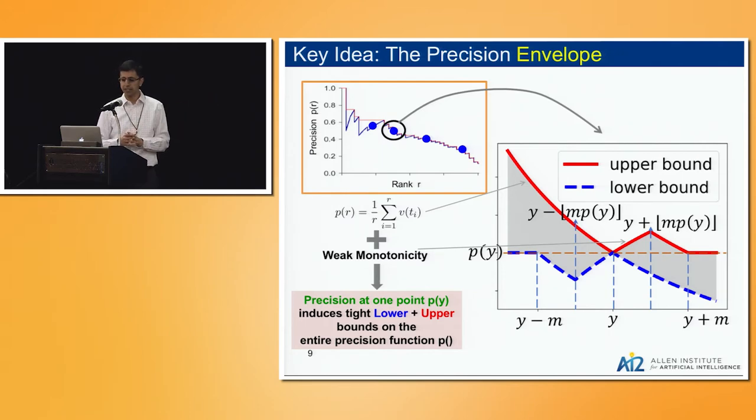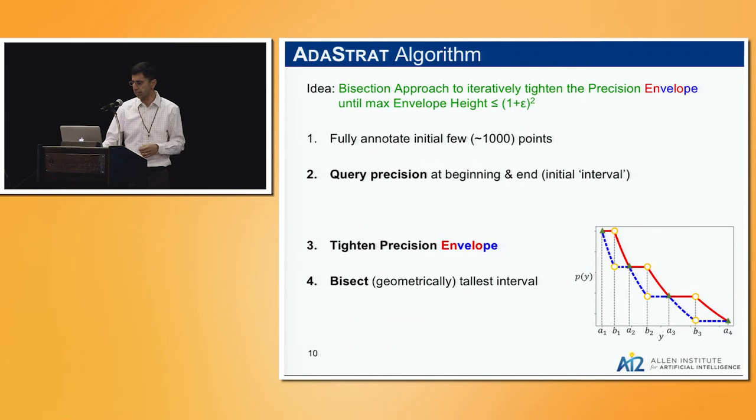One other thing I would note is that this envelope is tight in the sense that both the red and the blue things are plausible valid precision functions given some data. Any valid curve that passes through y must lie within that gray area. So it's a tight envelope.